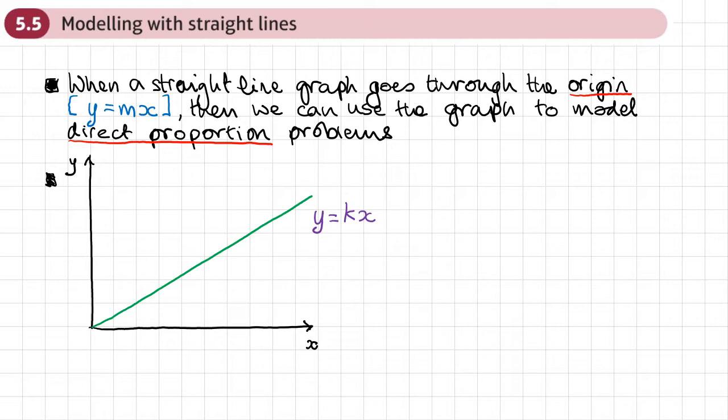Now k we know would be the gradient, and we can see how we would find the gradient, how we'd find the value of k. But in the context of a question, we want to know, what does k do? How does it operate?